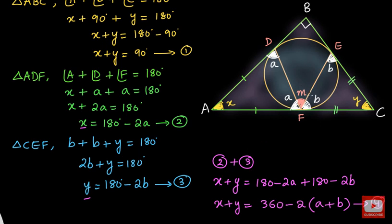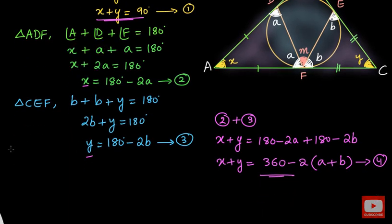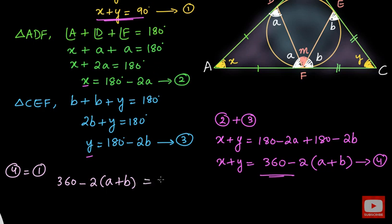Our goal is to find angle M. We now have two results: result 1 says X plus Y equals 90, and result 4 says X plus Y equals 360 minus 2(A plus B). Since both equal X plus Y, the right-hand sides are equal: 360 minus 2(A plus B) equals 90. Now we need to relate A, B, and M. In the figure, A, M, and B form a linear pair, so their sum equals 180 degrees: A plus M plus B equals 180. Therefore A plus B equals 180 minus M.